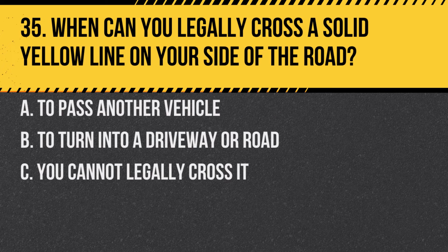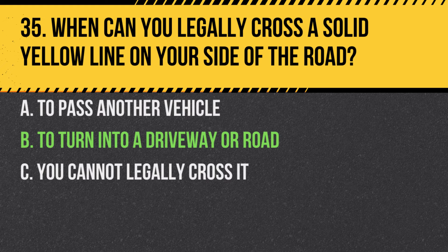Question 35. When can you legally cross a solid yellow line on your side of the road? a. To pass another vehicle. b. To turn into a driveway or road. c. You cannot legally cross it. Answer: b. To turn into a driveway or road. A solid yellow line should not be crossed for passing but can be crossed for turning.